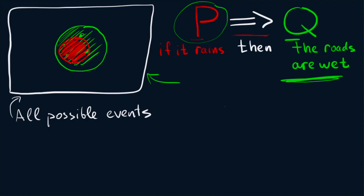So what does it mean? It means that when P happens or when you end up in a red circle, you know that Q happens. So you know that you're also inside the green circle. And this geometric representation is very powerful.